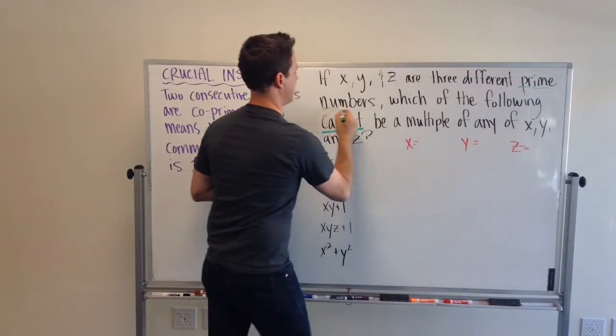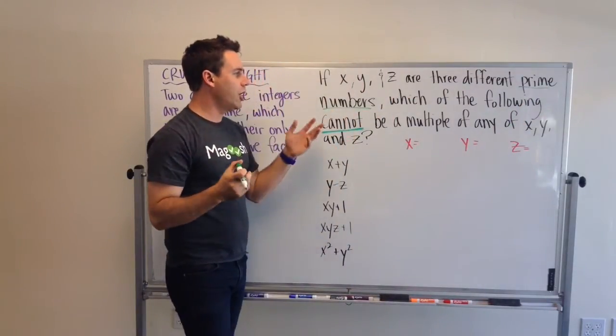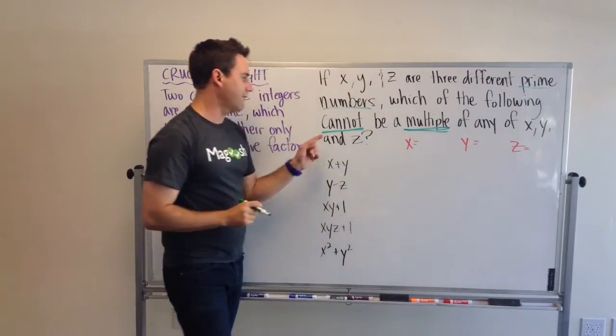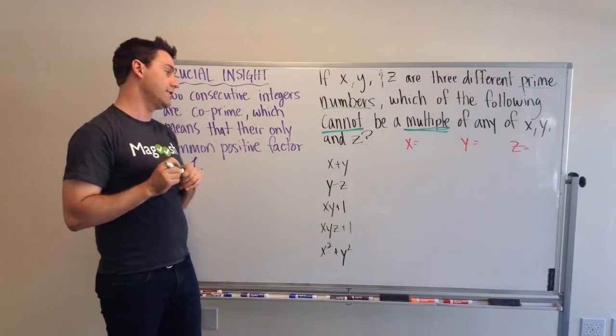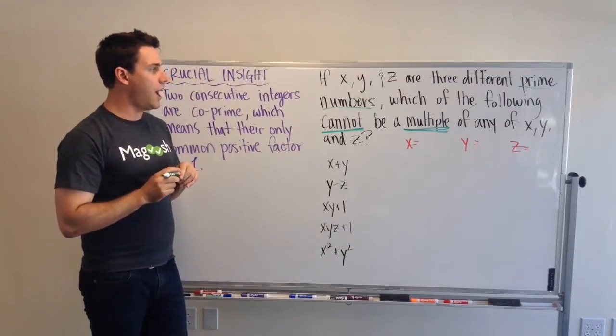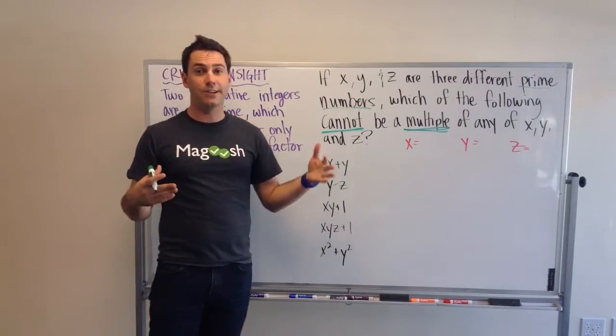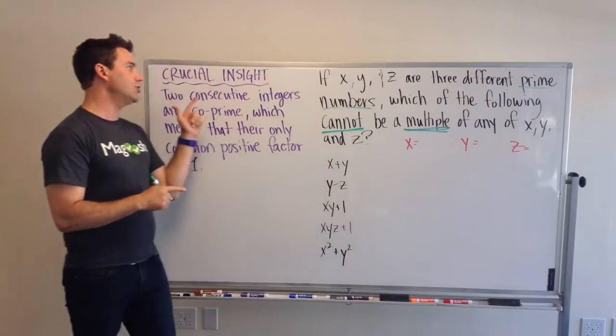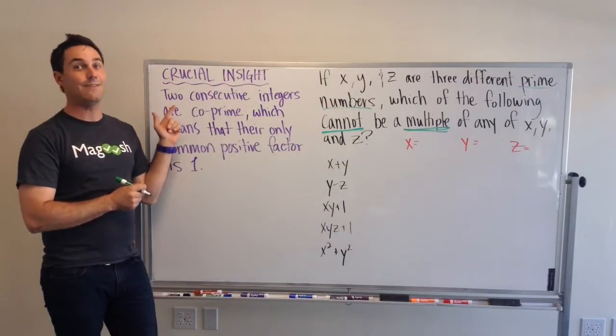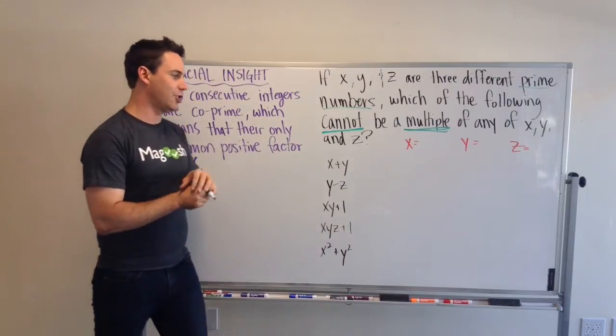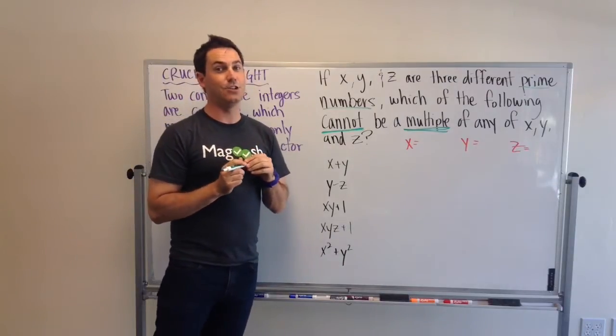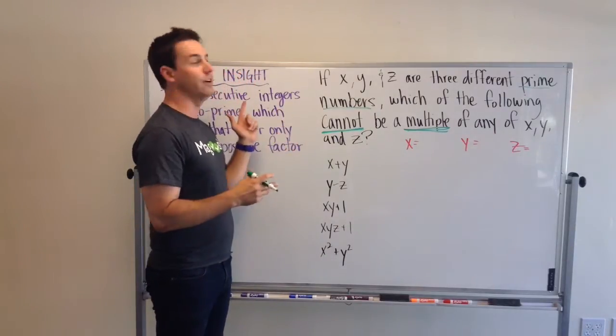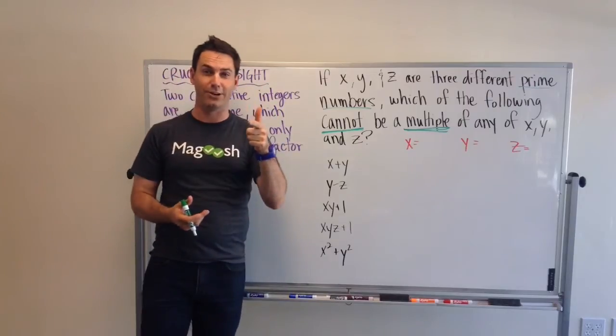So, we know we've got prime numbers that we're dealing with, and we want to know which of these cannot be a multiple of any of x, y, or z. So, it cannot be divided by x, y, or z. So, for these types of questions, you can dive in and just plug in numbers for x, y, and z. Although, there is a crucial insight, which I will get to, which will save you a lot of time. If you know your properties of numbers, you can definitely save a lot of time on the test. But, let's just take a look at how you would solve this if you didn't know this crucial insight, but what you will know at the end of the video.